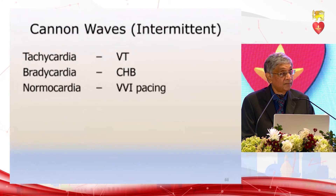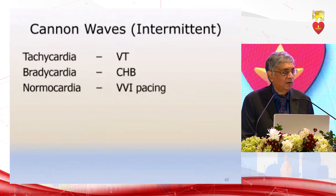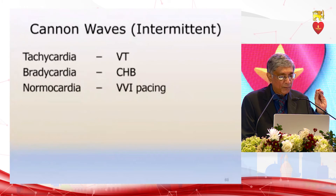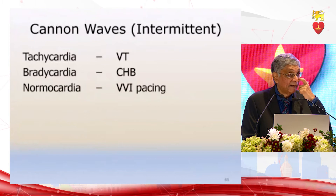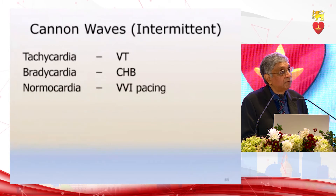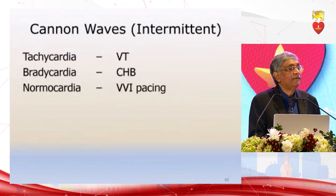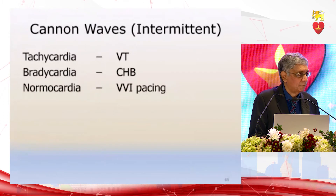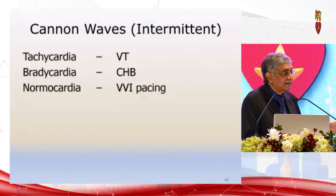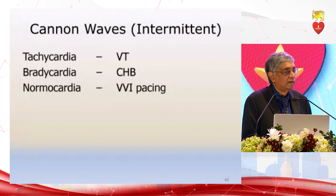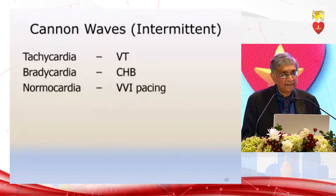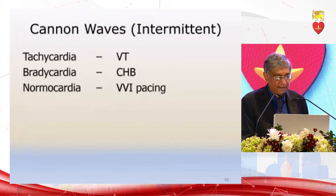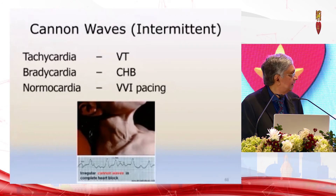Sometimes you look at the neck and see prominent JVP waves coming intermittently. If the prominent JVP wave comes intermittently with a tachycardia, that is AV dissociation due to ventricular tachycardia. If it comes with a bradycardia, that is AV dissociation due to complete heart block. If it comes with a normal heart rate, you may be seeing cannon waves in a patient with a right ventricular pacemaker — in all three cases there is AV dissociation giving rise to cannon waves.